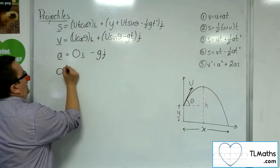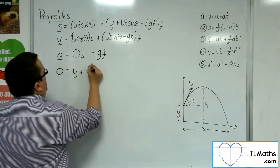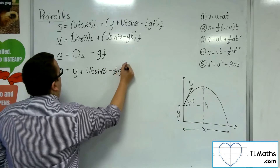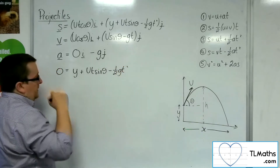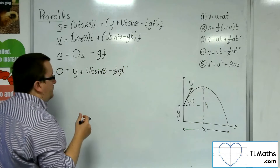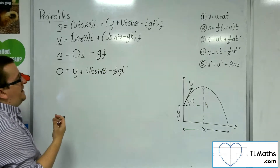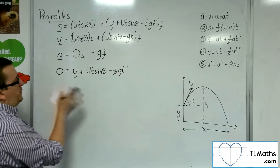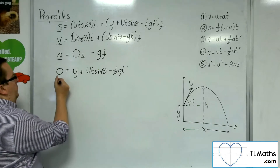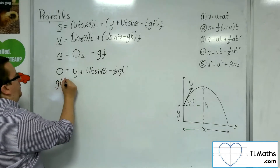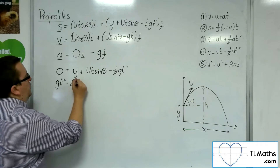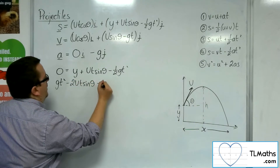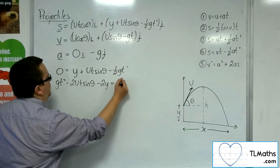So this will be 0, and I can set that equal to 0. So: 0 equals y plus ut sine theta minus a half g t squared. Now, I'm going to throw everything onto the left-hand side of the equation, and also multiply through by 2 to get rid of that fraction. So I'm going to get: g t squared minus 2ut sine theta minus 2y equals 0.